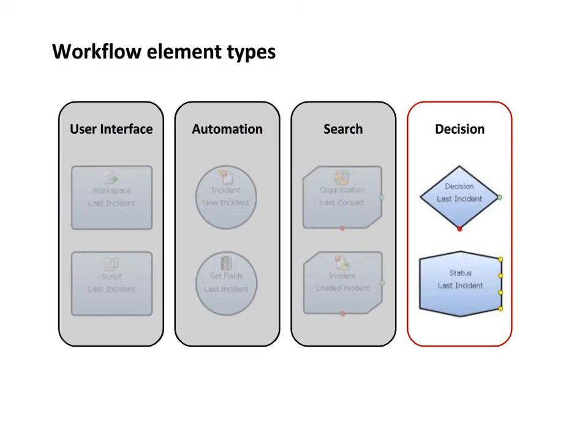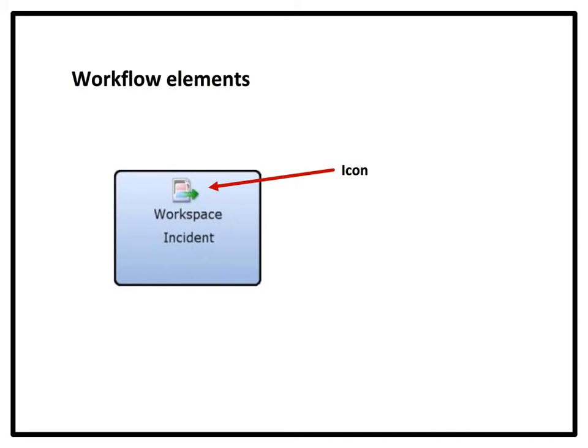Decision elements evaluate conditions to branch the flow across two or more paths based on conditions that you define. Most elements feature an icon and two text labels to help you identify the element's function. The top label contains the element's name, which may update to reflect the function you define for the element. For instance, in the case of a workspace element, the element name may update to display the name of the workspace used. The name can also be customized by simply clicking the text of the label and typing a new name.